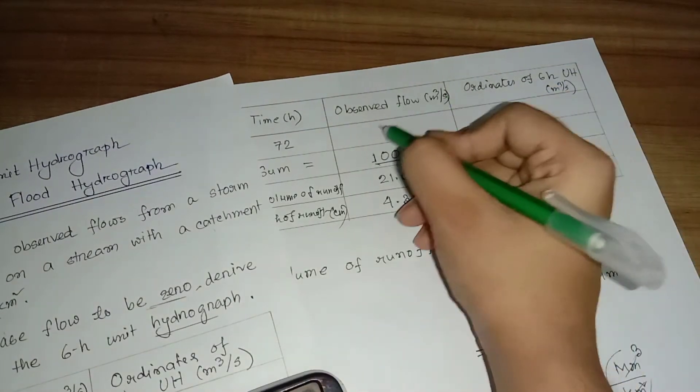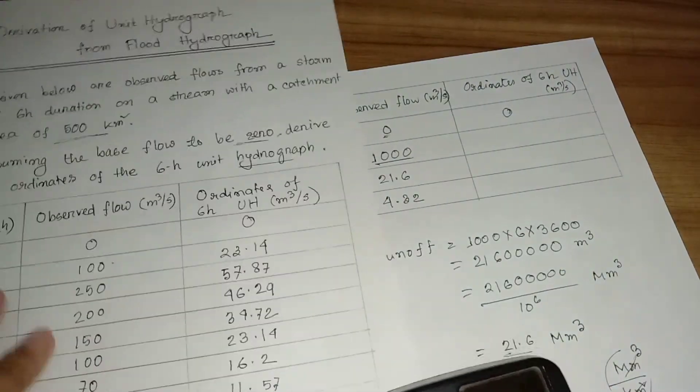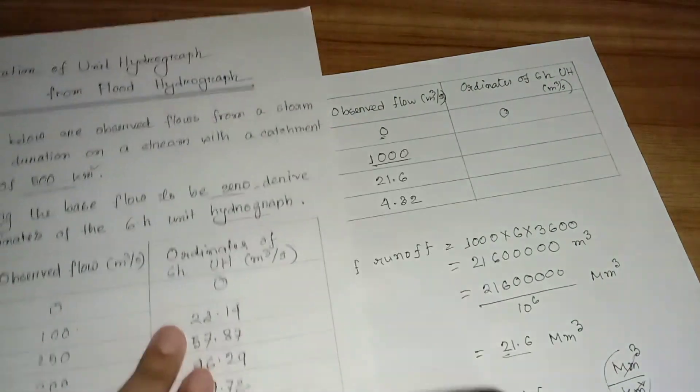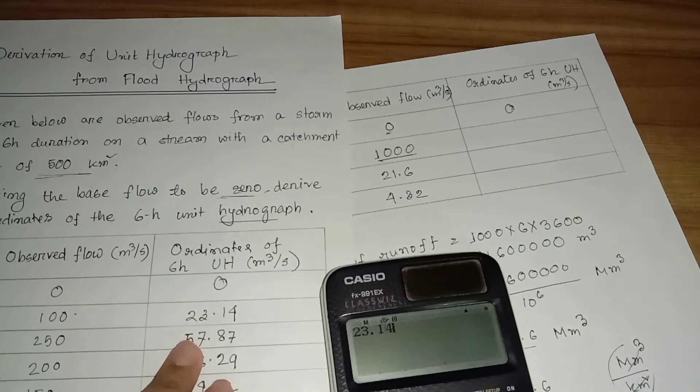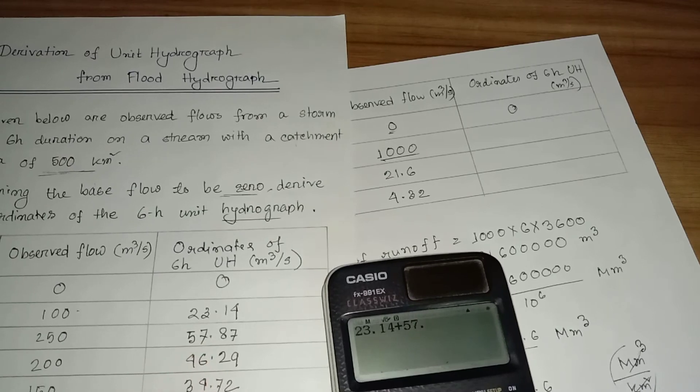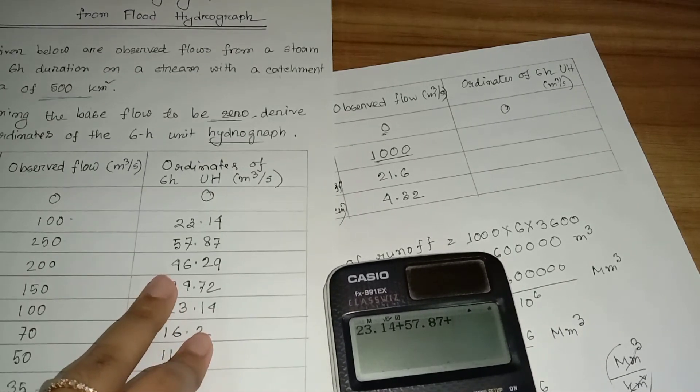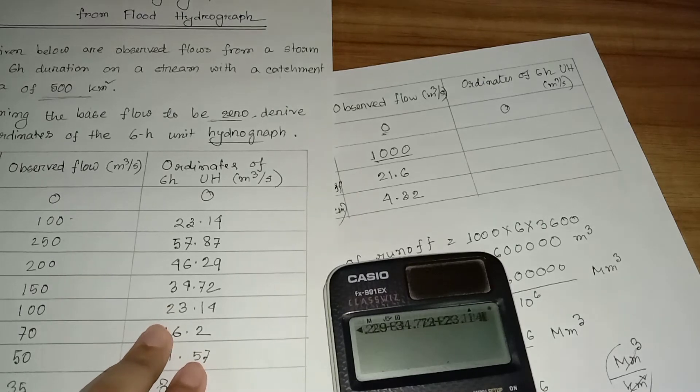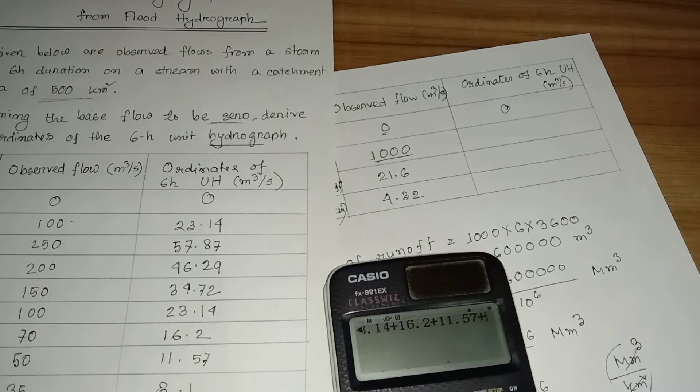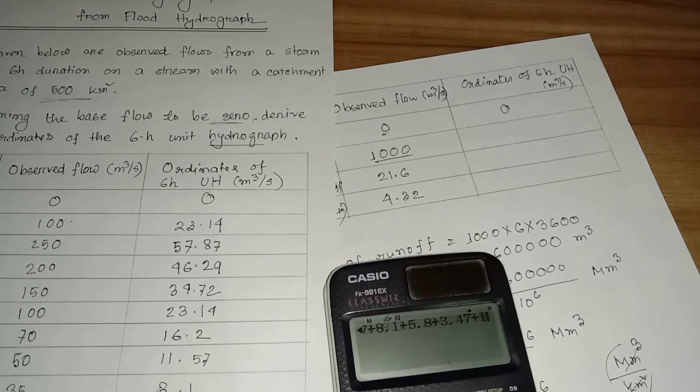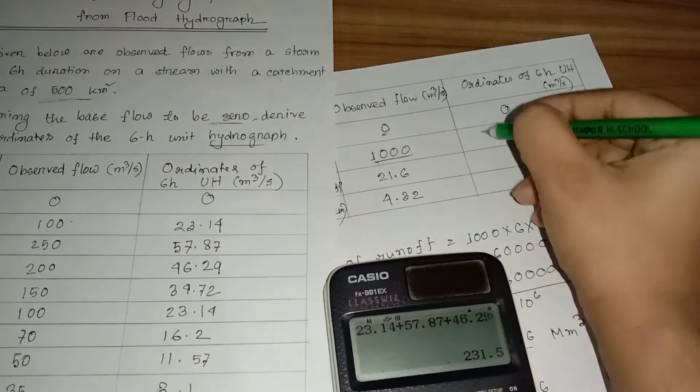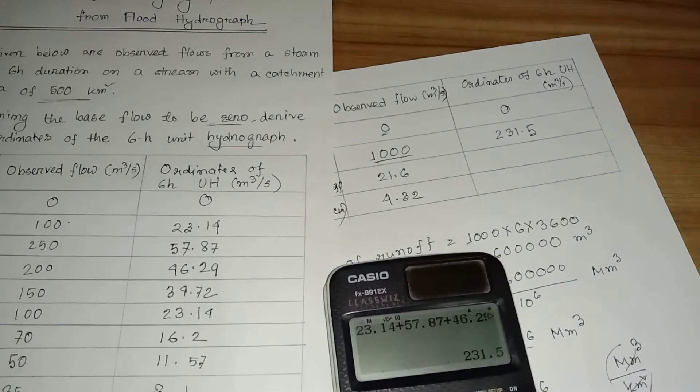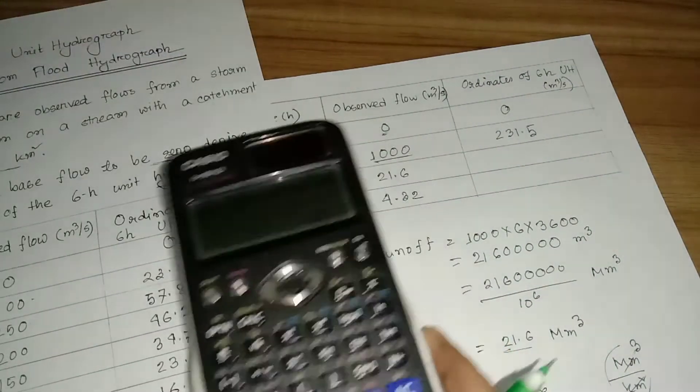And the last is zero. Now we can calculate the sum of these ordinates: 23.14 plus 57.87 plus 46.29 plus 34.72 plus 23.14 plus 16.2 plus 11.57 plus 8.1 plus 5.8 plus 3.47 plus 1.2, which equals 231.5.